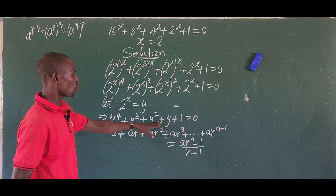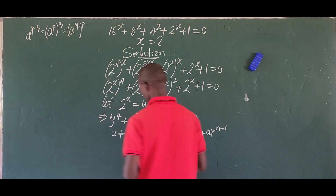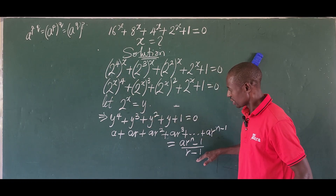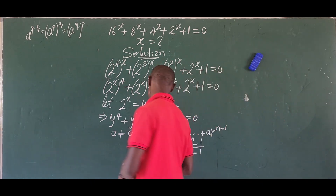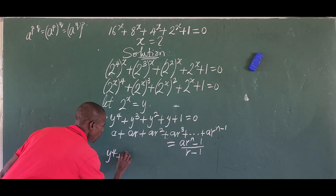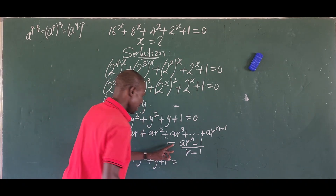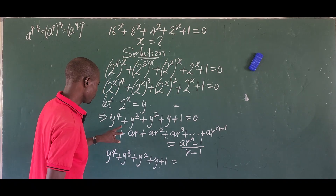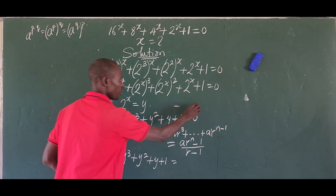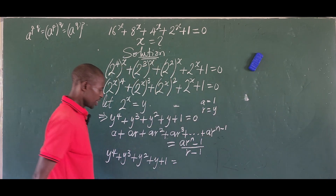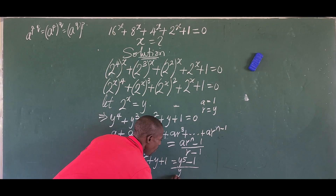So if we remember this expression, we can liken it to what we have here. Look at our question and relate it to the geometric series form. What will be the format of our expression in this form? It's going to give us something like this: y to the power of 4 plus y to the power of 3 plus y to the power of 2 plus y plus 1. If we check carefully, a is equal to 1 and r is equal to y. So a equals 1 and r equals y.